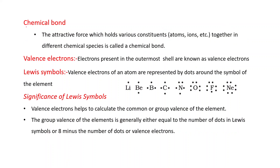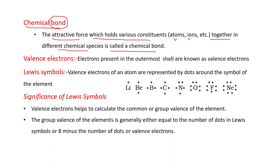First of all, what is a chemical bond? Before discussing in terms of chemistry, in general what is the meaning of bond? Bond means attraction — an attractive force between two objects, two things, two people. If this bond exists between two chemical species, then that is known as a chemical bond. The attractive force which holds various constituents like atoms or ions together in different chemical species is called a chemical bond.